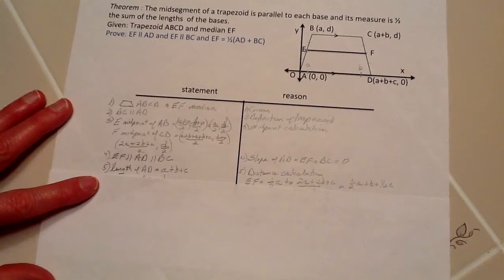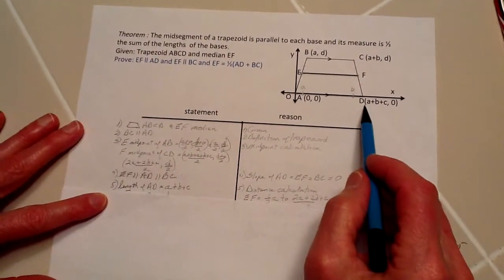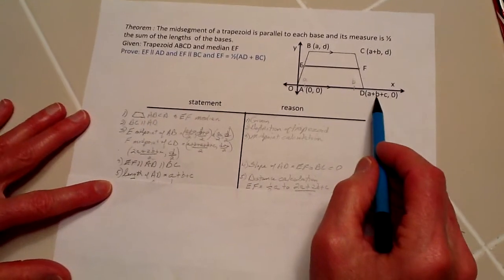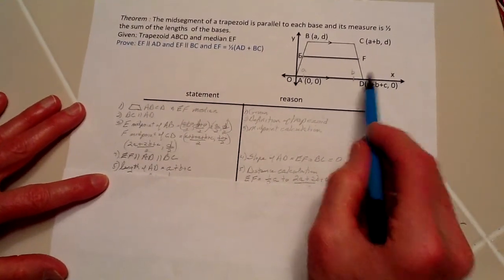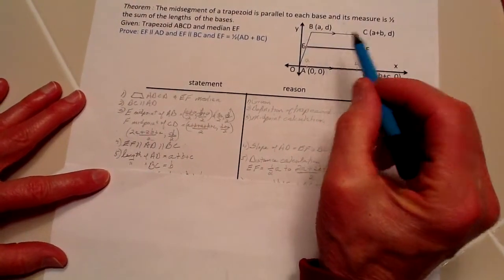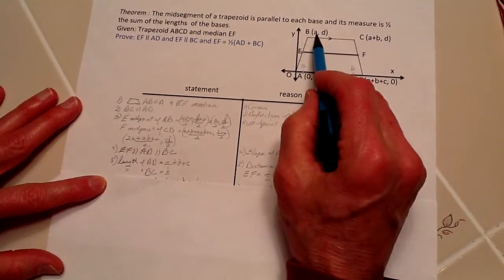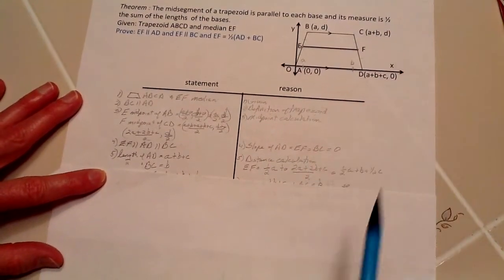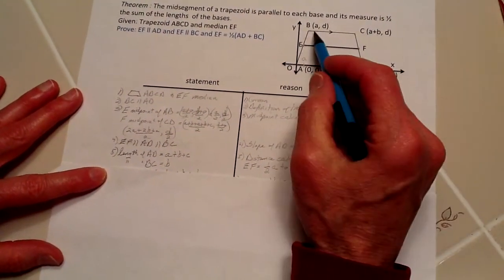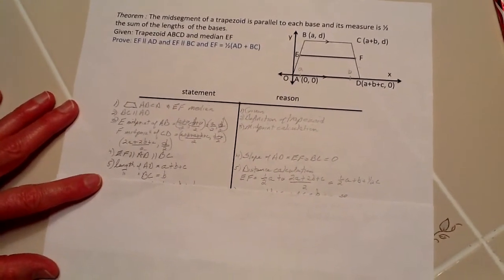For the length of AD, we know the length of AD, as indicated here, is A plus B plus C on the X axis. For BC, from B to C, we start at A, so the distance is B. There was no change in the Y axis for that.